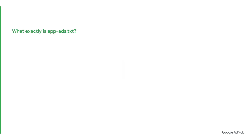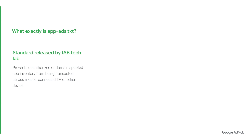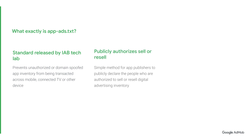So, what exactly is Apex.txt? It is a standard released by IAB Tech Lab that helps prevent unauthorized or domain-spoofed app inventory from being transacted across mobile, connected TV, and other devices. In other words, it defines a simple method for app publishers to publicly declare who is authorized to sell or resell their digital advertising inventory.